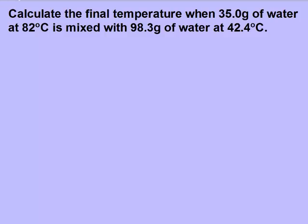This next one is a harder one because we're looking for the final temperature. Also, people don't realize that it's a calorimetry problem because we're only dealing with water. But notice that the waters are at different temperatures and we even have different masses of them, which tells you that you have two different substances. We have water at 82 degrees Celsius and we have water at 42.4 degrees Celsius, so we still have to use our calorimetry equation.